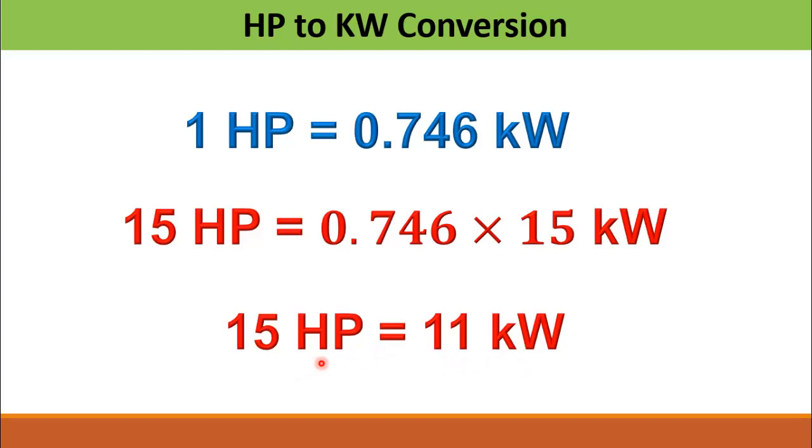So 15 horsepower is equal to 11 kilowatt. So whatever the value of the horsepower is, you just simply multiply that value with 0.746 in order to convert that horsepower into kilowatts.